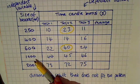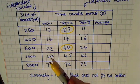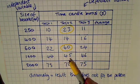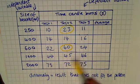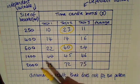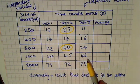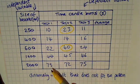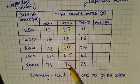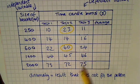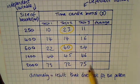For the 1000ml beaker, we have the results 44, 45, and 46 seconds, all of which are very similar to each other, so I can't identify any anomalies. And finally, for 2000, I have 73, 72, and 75. All those results are similar, so I won't identify any anomalies.